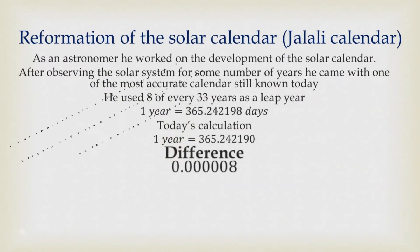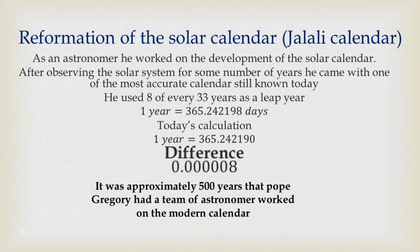Now, 500 years later, after the death of Omar Khayyam, Pope Gregory came up with his solar system, which we call the Gregorian calendar today, using a team of astronomers to work on that calendar. But which is not as accurate as the Omar Khayyam calendar. And this credit made him so relevant in the science world today.